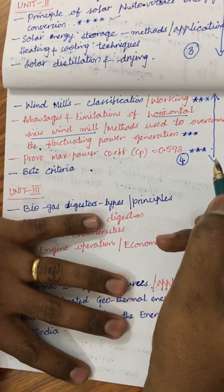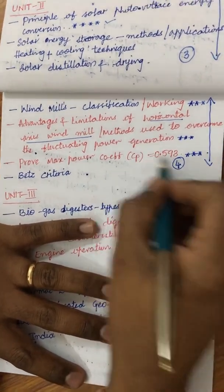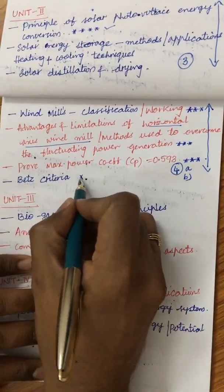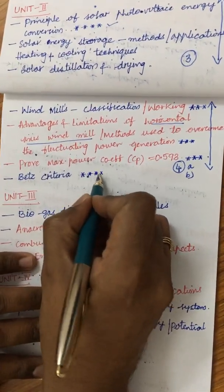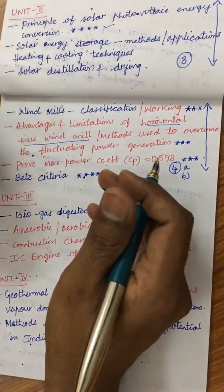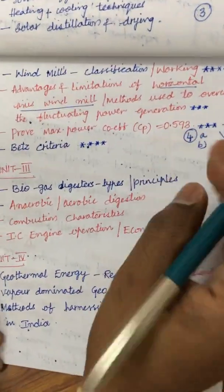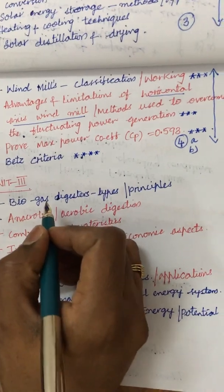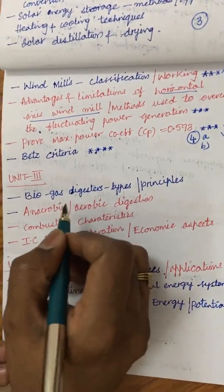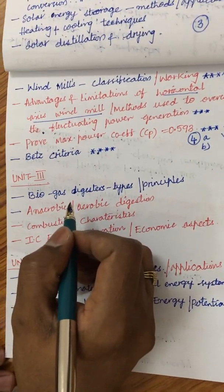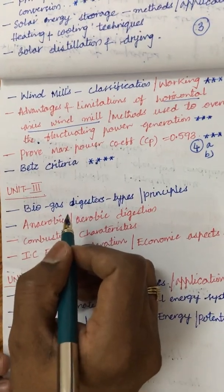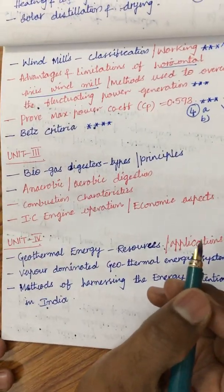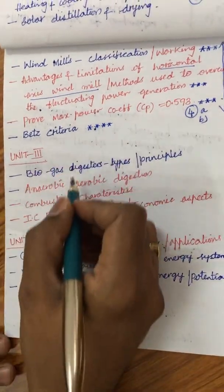From Unit 1 you will get two questions and from Unit 2 also two questions. The Betz criteria is also important. I have covered only the key concepts where students can score well. Since this is a theory subject, you can score better marks in the final year. Do not skip this video — I am going to give you important tips on how to score better marks in theory subjects.